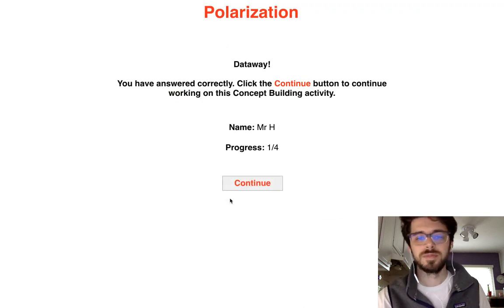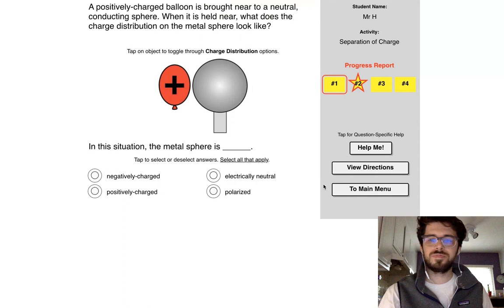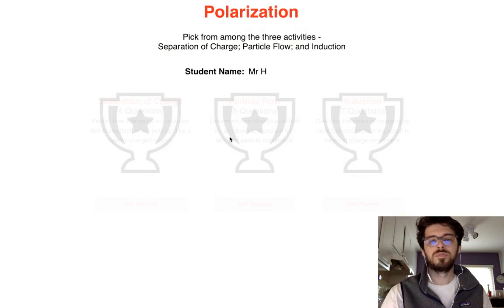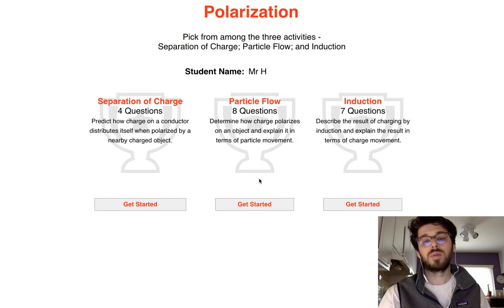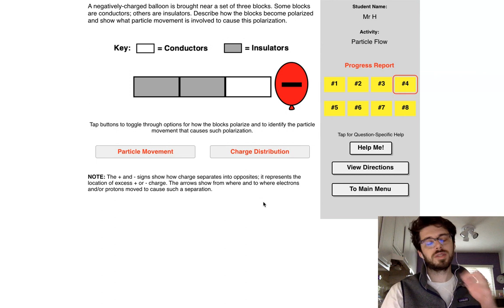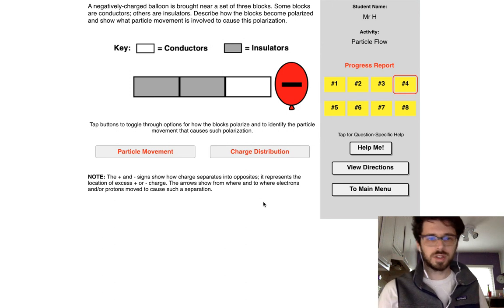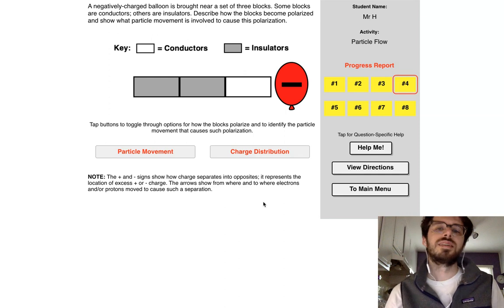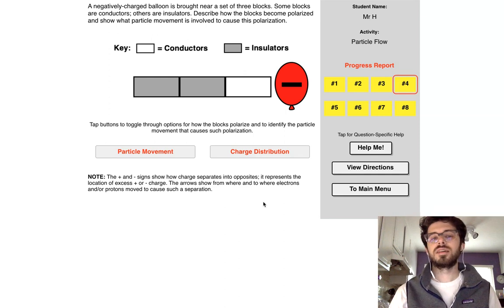Okay, so that one is completed. Let's return and do the particle flow. Let's read the instructions: a negatively charged balloon is brought near a set of three blocks. Some blocks are conductors, others are insulators. Describe how the blocks become polarized and show what particle movement is involved to cause this polarization.